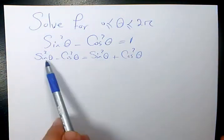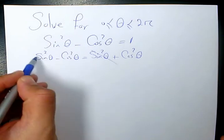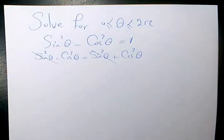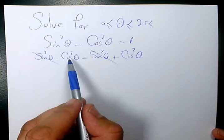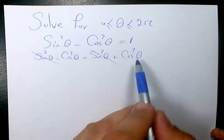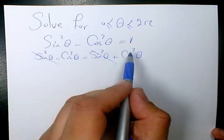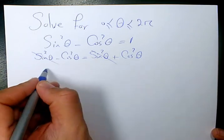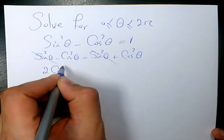Now, since sin²θ appears on both sides, we can get rid of it and move this term over. That's going to be plus. So cos²θ + cos²θ gives us 2cos²θ equals 0.